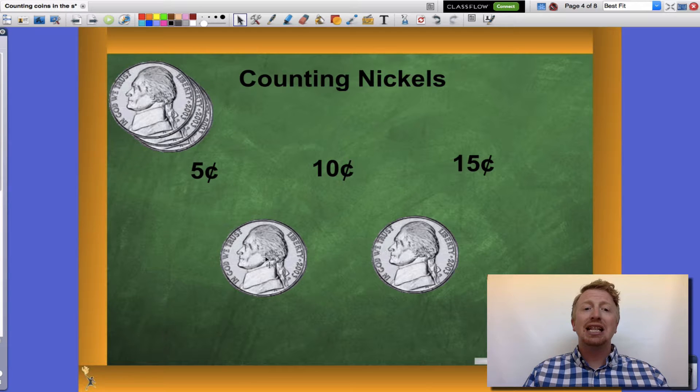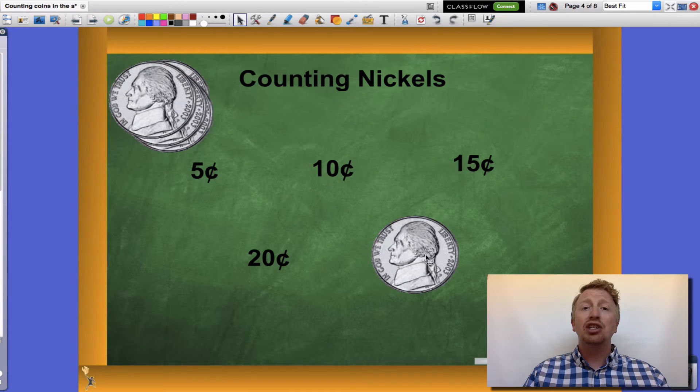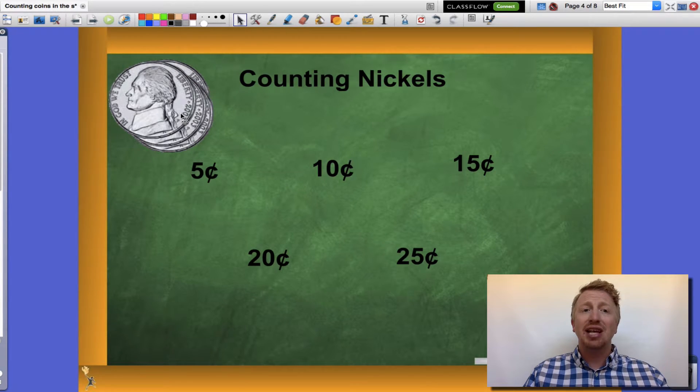then fifteen, then twenty, then twenty-five cents. I had five nickels which are worth a total of twenty-five cents. I counted by fives in order to figure that out.